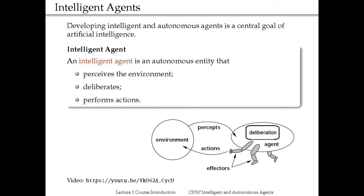This agent could be, as an example, a self-driving car, a virtual bot that participates in internet bidding and auctions, a delivery robot, or a chess-playing software program.